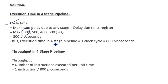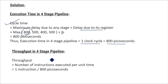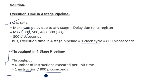So the execution time in the four-stage pipeline is one clock cycle, that is 800 picoseconds. Now we need to calculate the throughput. Throughput is the number of instructions executed per unit time, which equals one instruction divided by one clock cycle, or divided by the execution time per stage in the pipeline. So throughput equals one instruction divided by 800 picoseconds. This is our throughput for the four-stage pipeline.